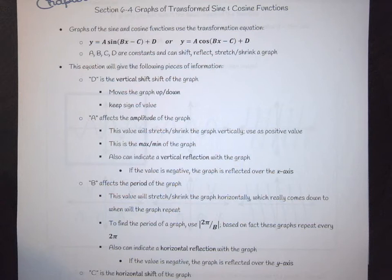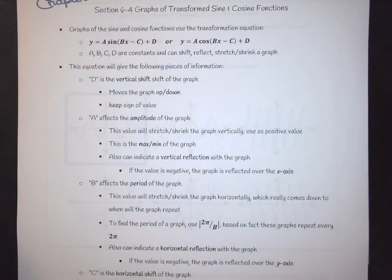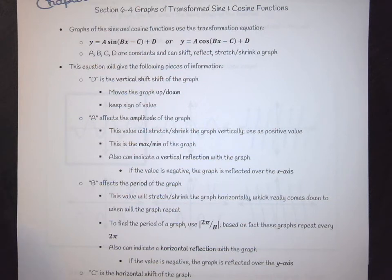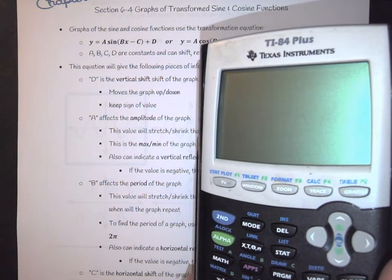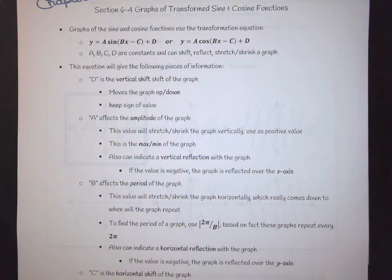Welcome back to this installment of the latest and greatest with PreCal. Here we are going to look specifically at graphing transformed sine and cosine functions — meaning sine and cosine functions that have moved, or are stretched or squished. It is one of the most annoying and time-consuming things, but we've got a handy-dandy graphing calculator and some helpful tips and tricks, so sit back and enjoy the ride.